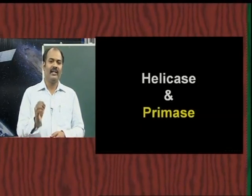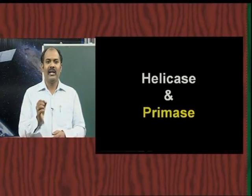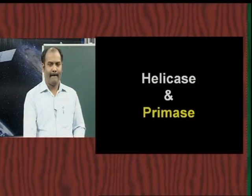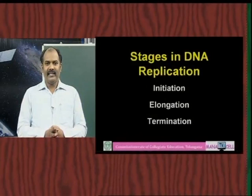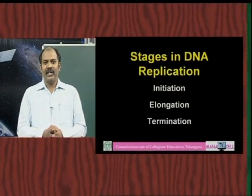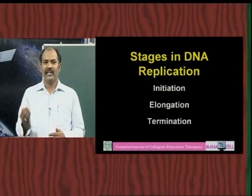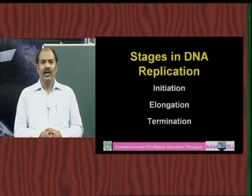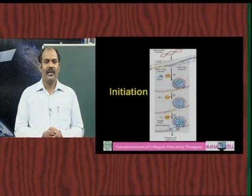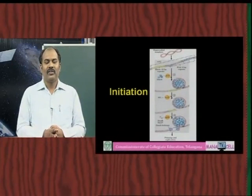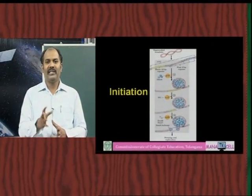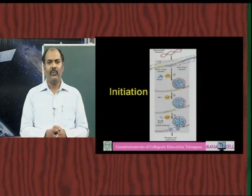DNA replication is divided into three stages: initiation, elongation, and termination. In initiation, bacterial DNA is a double-stranded circular chromosome that has a specific sequence somewhere on the chromosome, known as oriC — the origin of replication. This specific sequence is present at only one location in bacterial DNA. In eukaryotes, there are multiple origins of replication because their chromosomes are much larger.